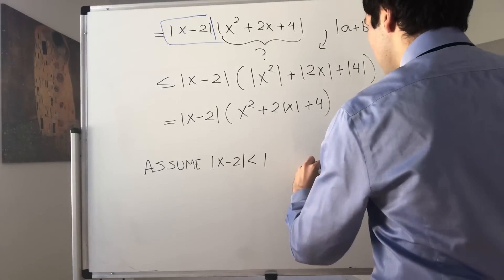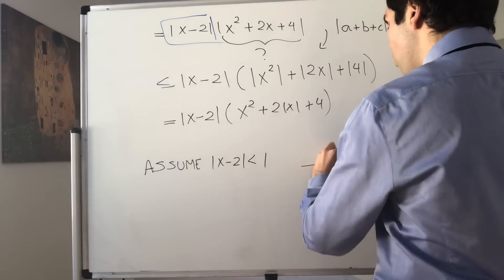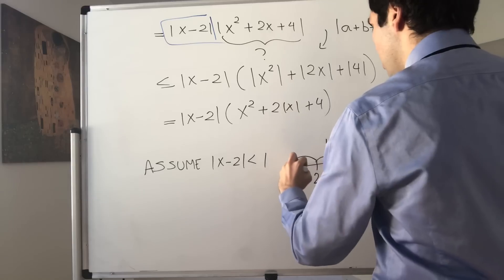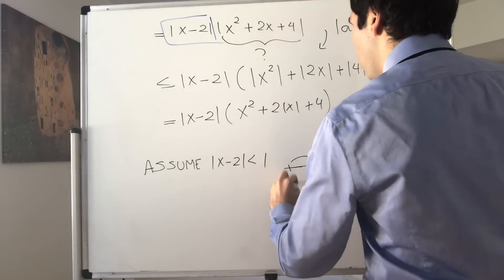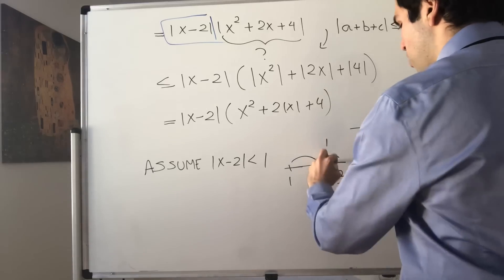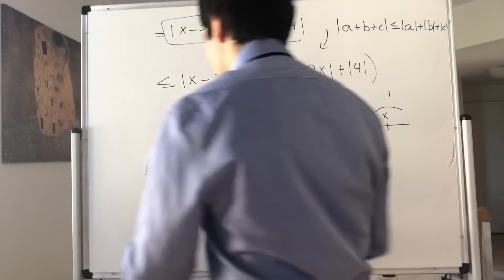If x is a distance of 1 away from 2, then it's definitely between 1 and 3. X is somewhere between here.